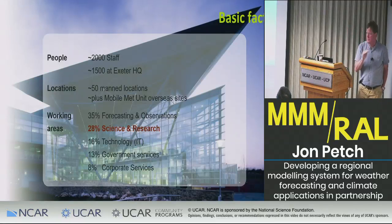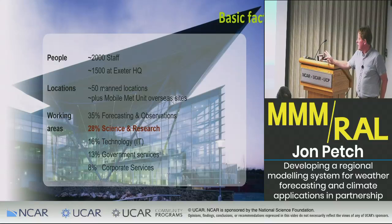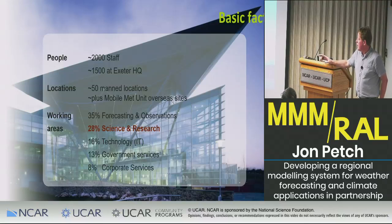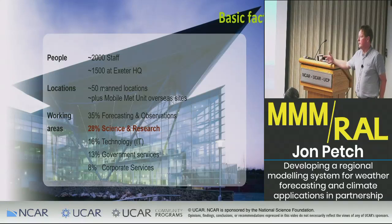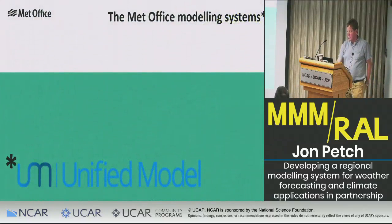There are about 2,000 people who work for the Met Office - not as big as NOAA, we're a smaller country. About 1,500 people are at Exeter HQ, as well as 50 other manned locations around the world. About 28% of those 2,000 people are in the science and research area - doing research into observations, into modelling, how to use those, and developing the modelling system. That's the area that I and Chris sit in.